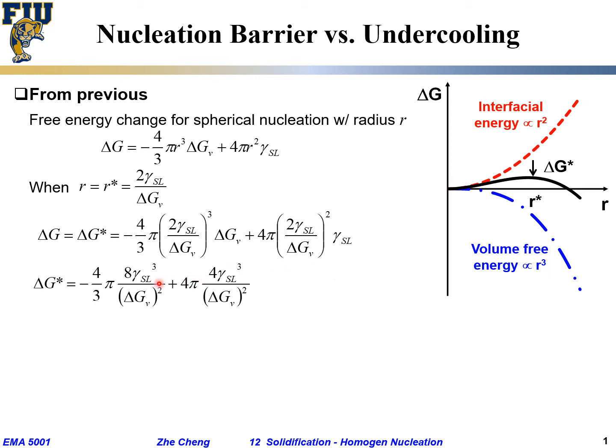We're going to simplify this. Minus 4/3 we keep, π we keep. This 2³ gives us 8, γ³ we keep, and ΔGv³. But now we also have a ΔGv here, so it becomes ΔGv² in the denominator. Then 4π we keep in front, 2² becomes 4, γ², and ΔGv² we keep here. This is 2 and here we have 1, that becomes our 3 here. Here we have power of 2, we have 1 here, we become power of 3.